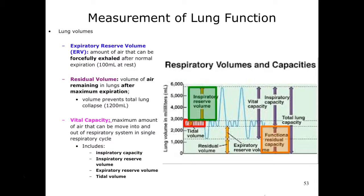Expiratory reserve volume is the amount of air that can be forcefully exhaled after normal expiration. Let it out and then contract your abdominal muscles and internal intercostal muscles, pushing all of that air out as much as possible — that is about 100 milliliters at rest. Residual volume is air we cannot remove from our lungs; it's the volume remaining after maximum expiration.